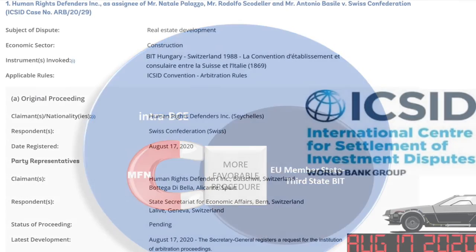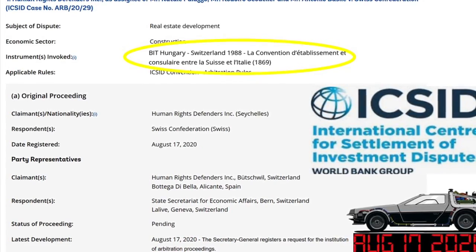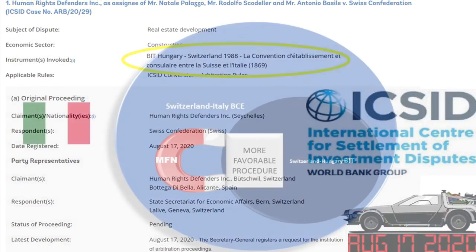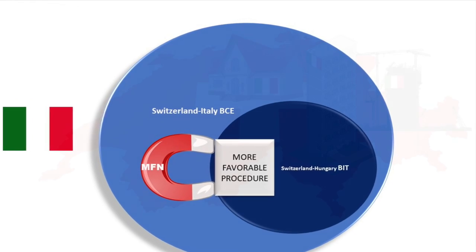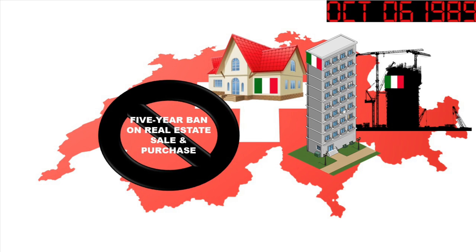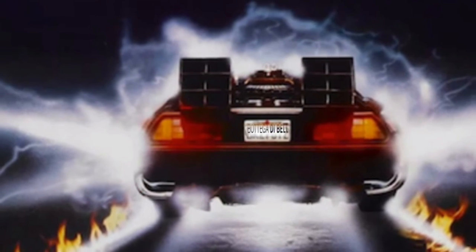A case in point of their most recent practical application is the first-ever investment arbitration registered at ICSID against Switzerland. In this ICSID arbitration, the claimant invoked the application of the Switzerland-Italy BCE in conjunction with the Switzerland-Hungary BIT by relying on the broad MFN clause of the BCE in Article 10, which allows to import 'all advantages.' This pioneering case goes to show how the rediscovery of these long-forgotten international instruments may have a huge application in contemporary and future investment arbitration practice.